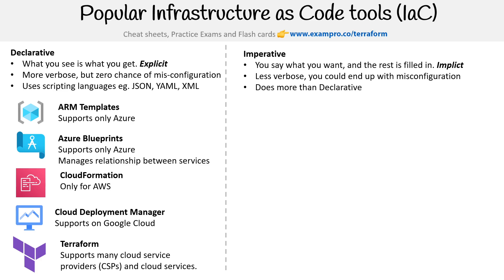Imperative can do more than declarative. There are just some hard limitations with declarative languages, so there are cases where you want to use imperative. Imperative languages use programming languages like Python, Ruby, JavaScript, Golang — there's likely an SDK for it. So it's just a lot more programmer friendly, and a lot of developers like imperative tools.